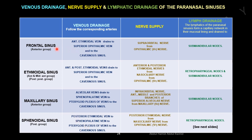Nerve supply. The frontal sinus is supplied by the supraorbital nerve — the ophthalmic nerve — the first division of the trigeminal nerve. The ethmoidal sinus is supplied by the anterior and posterior ethmoidal nerves from the nasociliary nerve, which is from the ophthalmic nerve, the first division of the trigeminal nerve. The maxillary sinus is supplied by the infra-orbital nerve and the anterior, middle, and posterior branches of the superior alveolar nerve from the maxillary division — the second division of the trigeminal nerve. The sphenoidal sinus is supplied by the posterior ethmoidal nerve from the nasociliary nerve, from the ophthalmic division, the first division of the trigeminal nerve.